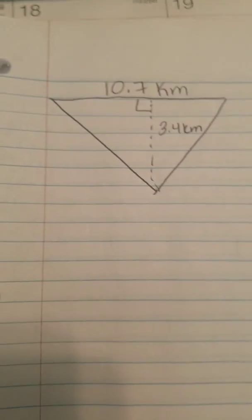To find the area of a triangle using decimals, all you have to do is utilize the same formula and then multiply and divide.